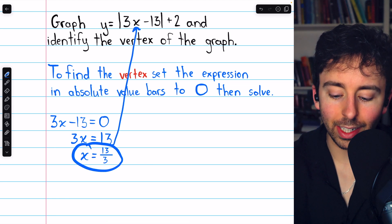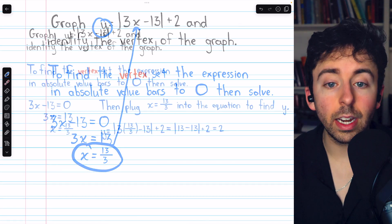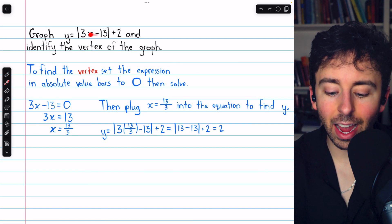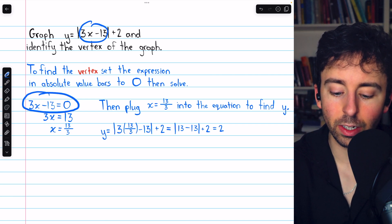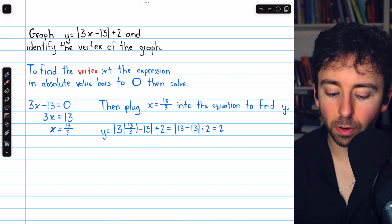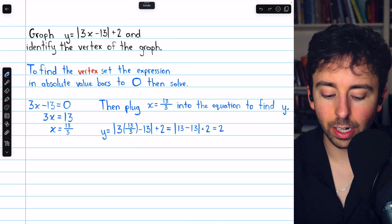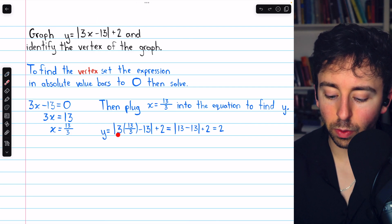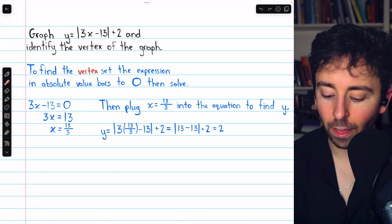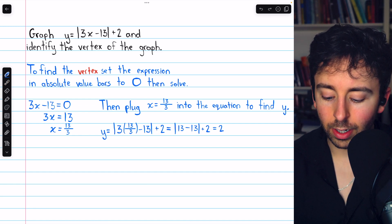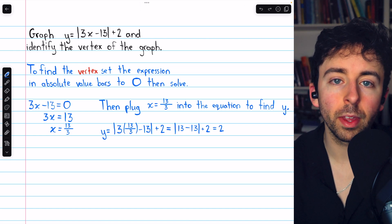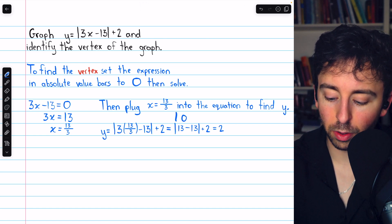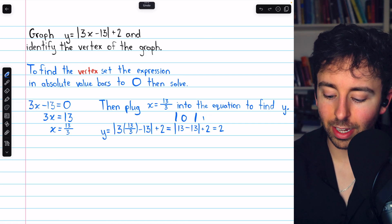Like I said, we'll plug that back into this equation to find the y-coordinate of the vertex. Now when we plug this x-value in, what's inside the absolute value bars should become 0, because that's where this x-value came from, was setting that expression equal to 0. And we see that in action here. So we take this equation and plug in x = 13/3. So y equals the absolute value of 3 times x, but x is 13/3, minus 13, and plus 2. Now this multiplication by 3 and this division by 3 cancel out. So we're just left with 13 - 13 in the absolute value bars. And of course, that's 0. So this is the absolute value of 0 plus 2, which is just equal to 2.